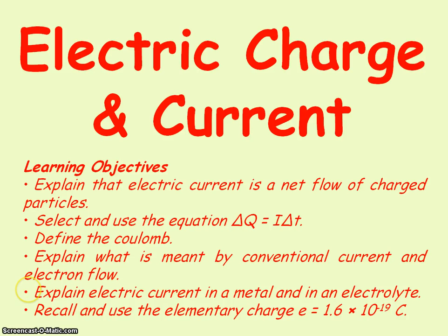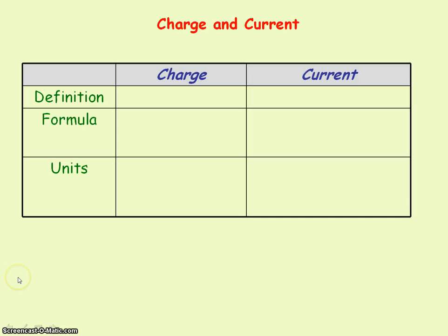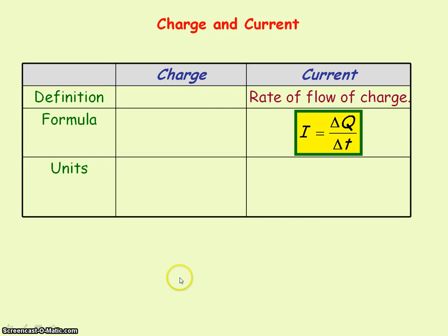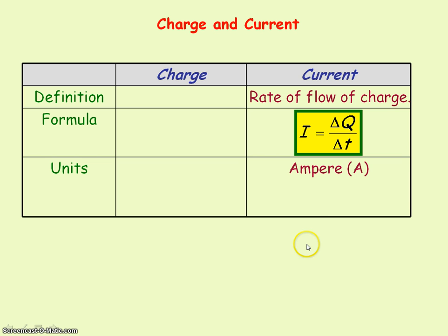Today we're going to be looking at electric charge and current. The definition of current is it is the rate of flow of charge, and how we express that mathematically is by this equation: I represents the current, delta Q represents the flow of charge, divided by the time it takes. Current is measured in amperes, with the symbol capital A.